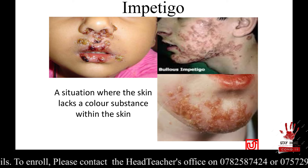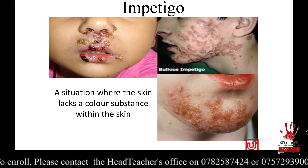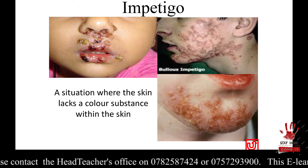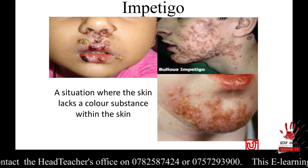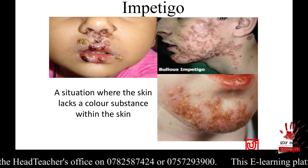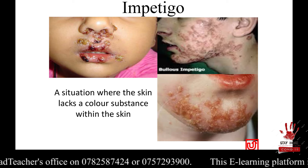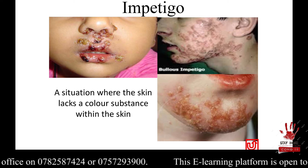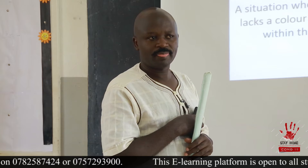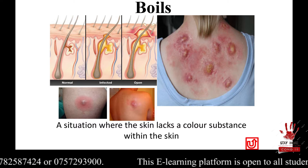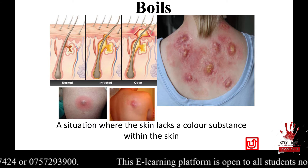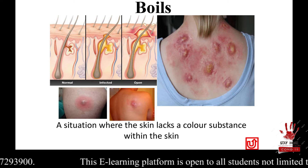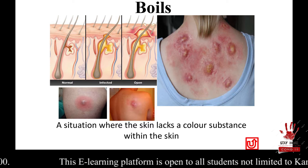We can also have another disease called impetigo — I-M-P-E-T-I-G-O. A person with this disease will have the whole skin lose its color, or lose the substance we call melanin, and the whole skin will lose its natural color. We can also have boils, which is also a skin disease that affects the skin and prevents it from performing its functions.